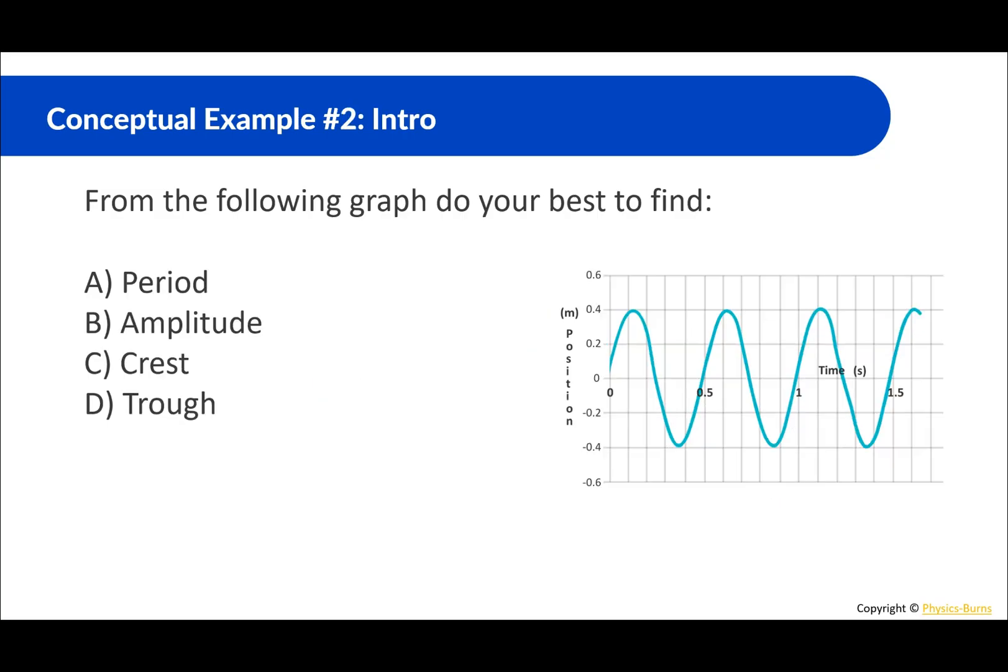Okay moving on. So this from the following graph do your best to find the period, the amplitude, the crest and the trough. So pretty similar but actually the graph is different. So we have position not as a function of the horizontal and the vertical but position as a function of time. So in x axis we have the time. So this is going to give us the period because remember period is how long it takes to make a full cycle. So if we're starting here and we go all the way up and all the way down then we can see that that cycle took 0.5 seconds. From here to here that also takes 0.5 seconds so that's the period.